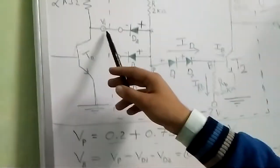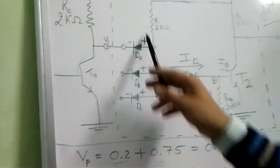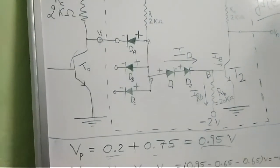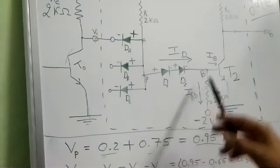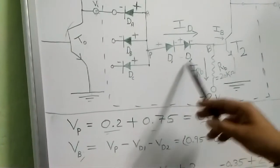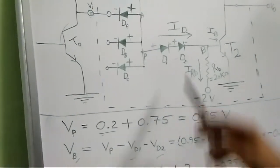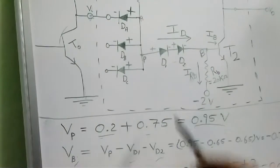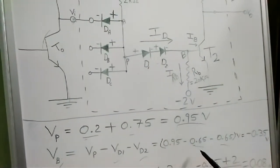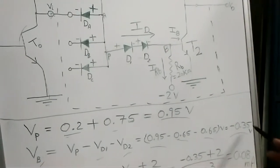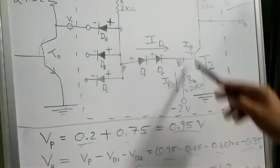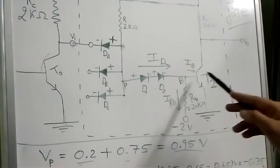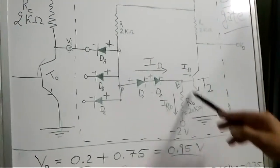The 0.2V comes from the saturated transistor output, and 0.75V is the voltage across the saturated diode, giving Vp = 0.95V. Now, Vp minus Vd1 minus Vd2: since very little current flows in this direction, the diodes are in cutoff and we use 0.65V for each, giving a voltage of minus 0.35V. We require at least 0.75V to drive T2 into saturation, but minus 0.35V is not sufficient, so T2 is in cutoff.